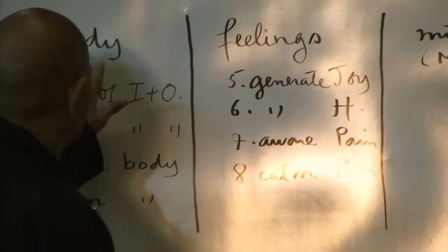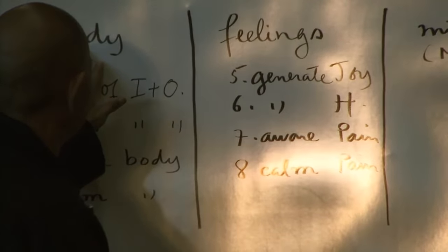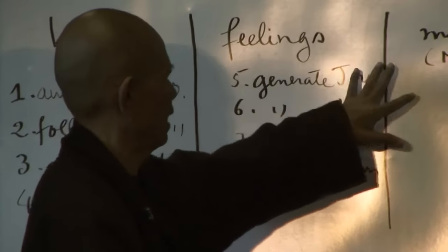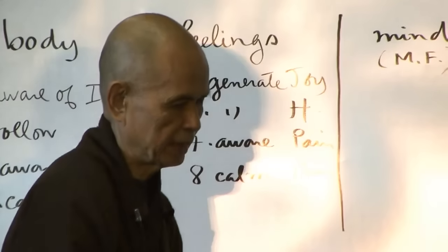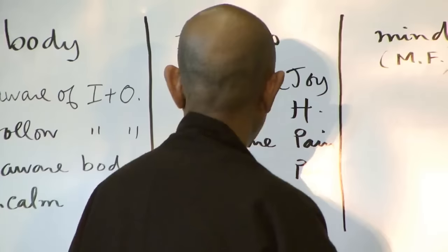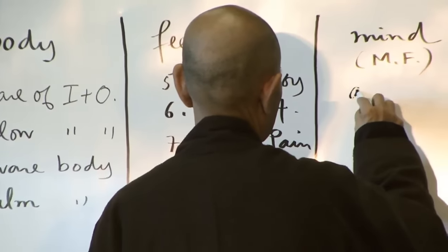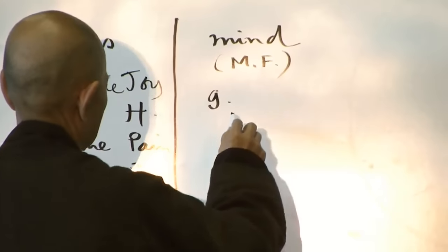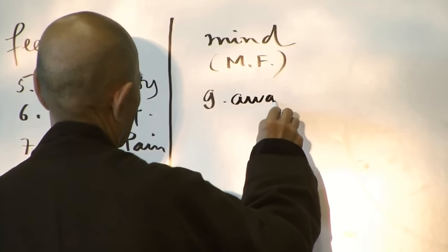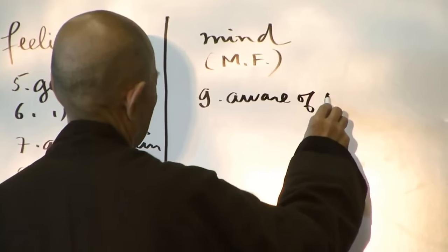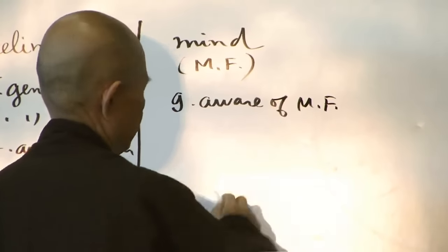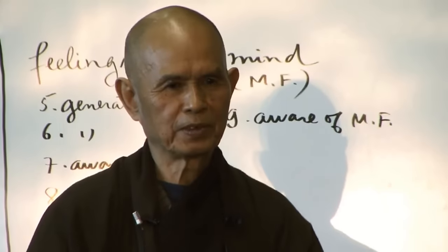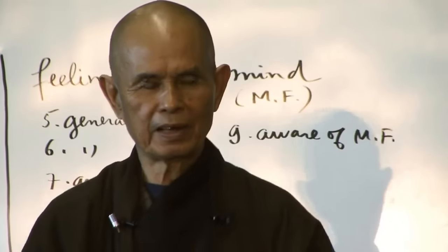So mindfulness has the body as the first object, feelings as the second object, and mind as the third object. And the ninth exercise is to be aware of the nature of each mental formation as it arises — simple recognition, simple awareness.